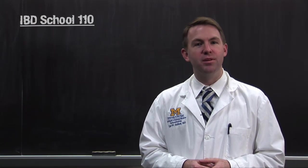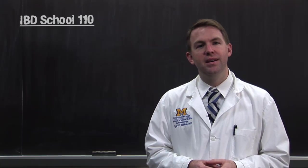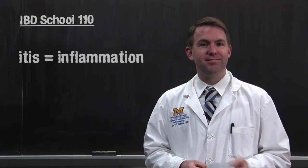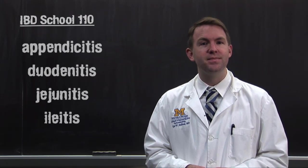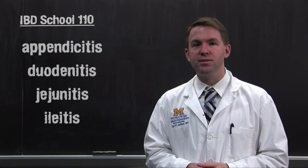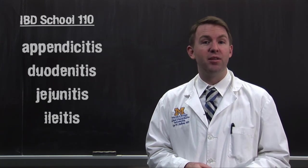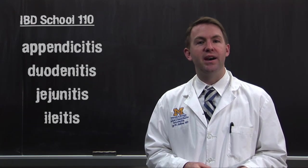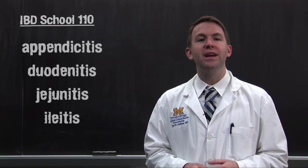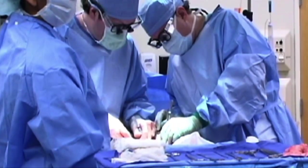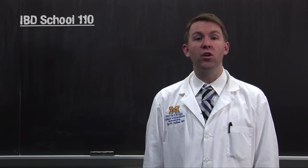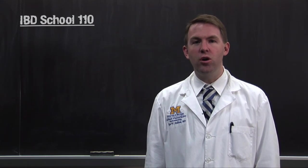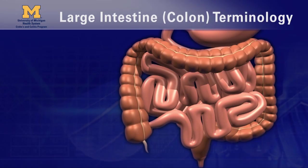Let's look at some terms related to problems in the small intestine. The suffix '-itis' means inflammation — you're familiar with appendicitis, inflammation of the appendix. When the first part of the small intestine is inflamed, we call it duodenitis. You can also have jejunitis or ileitis. When surgery is done on the small intestine, a portion of the surface area for absorbing food is taken out. Removing small segments is not a problem, but removing larger segments or repeated surgeries can cause nutritional problems.